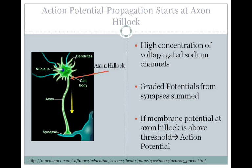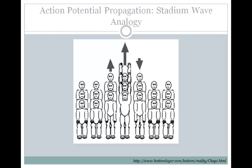These voltage changes travel passively to the axon hillock, and if the membrane potential at the axon hillock is above threshold, an action potential will be generated, and then it can be propagated down the axon towards the terminal bouton.